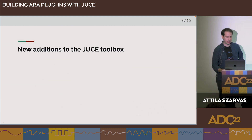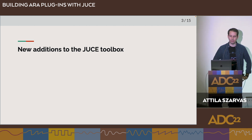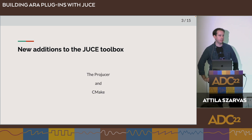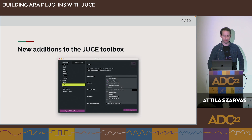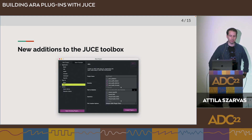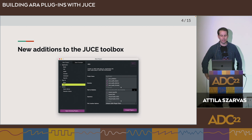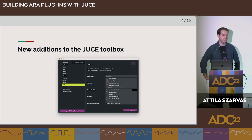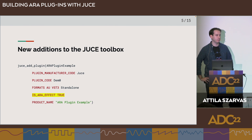Let's take a look at what kind of new features are now part of the JUICE toolbox. ERA support has been added to the producer and CMake as well. If you open the producer and create a new plugin project, you will find this new plugin template called ERA. It's very similar to the basic plugin template but has a few extra checkboxes related to ERA features. You also have the option to create ERA plugins from CMake.